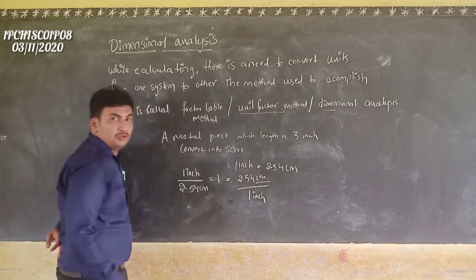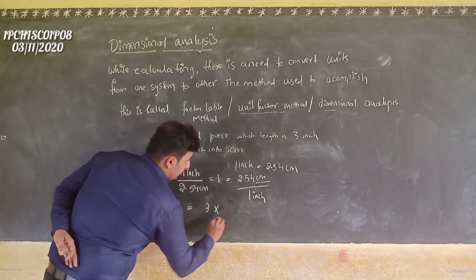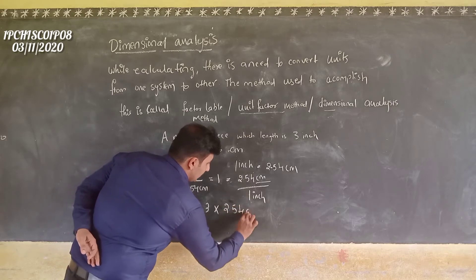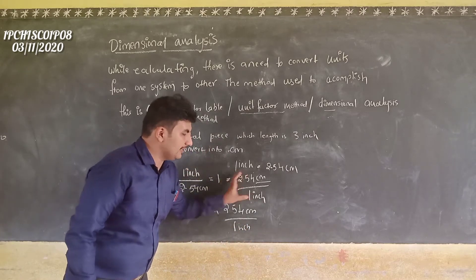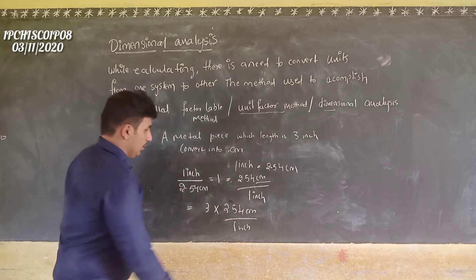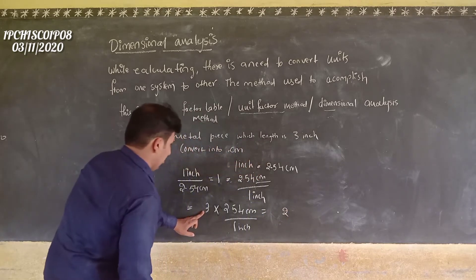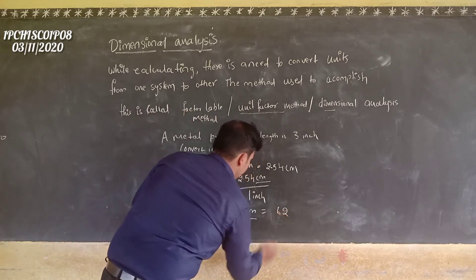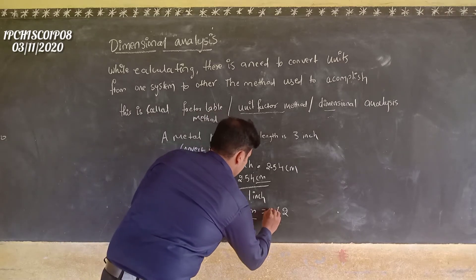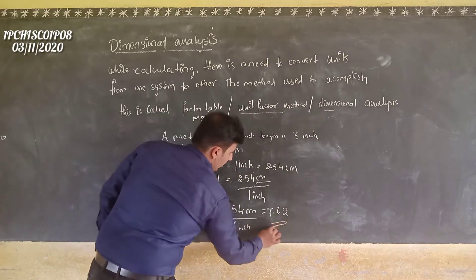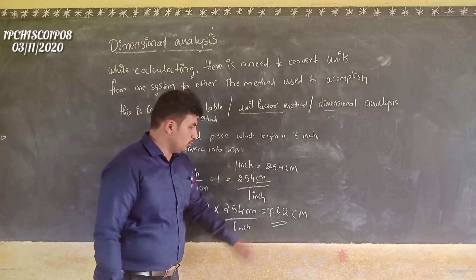Centimetre is in the numerator, so we use: 3 into 2.54 centimetres divided by 1 inch. This unit factor is used for the calculation. The answer is 7.62 centimetres. So 3 inches is equal to 7.62 centimetres. Like this, we convert one system to another system.